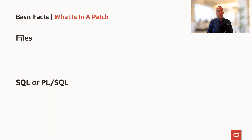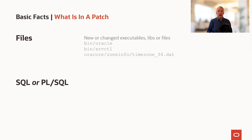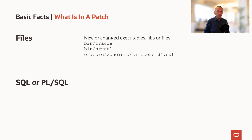Now let's have a look at what's actually in a patch. Roughly speaking there can be two kinds of things: files and SQL or PLSQL. Files could be, for instance, new or changed executables. If there was an error in the SRVCTL utility, we would ship out a new executable with a patch. It could also be libraries, or it could be the files used for time zone information. The files are changes to your actual Oracle home, to the files stored in the operating system.